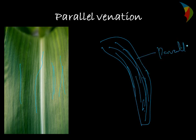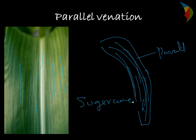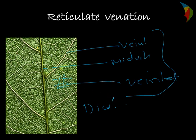Parallel venation is mostly found in monocotyledon plants. So these are the two main types of venation found in plants. Parallel venation is found in examples like sugarcane, maize, and other plants of the grass family. In the same way, reticulate venation is found in almost all dicotyledons, with examples such as ficus leaf, mango leaf, etc.